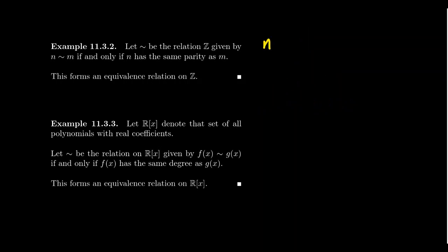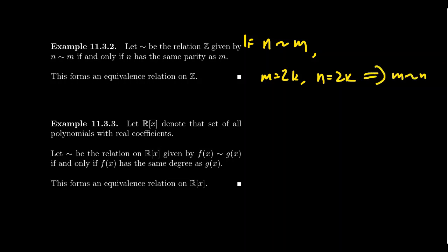For symmetry, suppose n is related to m — they have the same parity. If m is even, then n is even (same parity), so m has the same parity as n. If m is odd, then n is likewise odd, so m has the same parity as n. Either way, m is related to n, giving us the symmetric property.